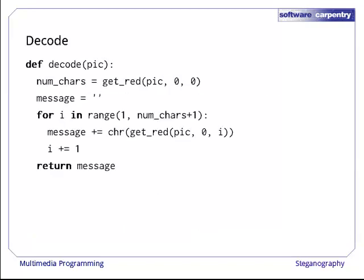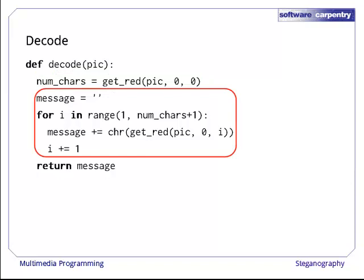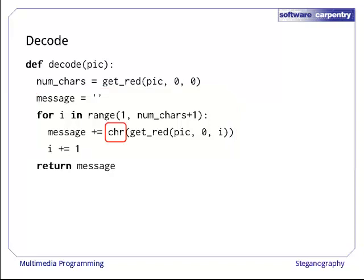And that was easy enough. How about decoding? The first step is to get the message's length from the pixel at 0,0. Once we have that, we loop that many times, getting the red component of each successive pixel, translating it from an integer into a single character string, and appending that string to our message. As promised, we use the char function to turn the integer encoding of a character into a string.